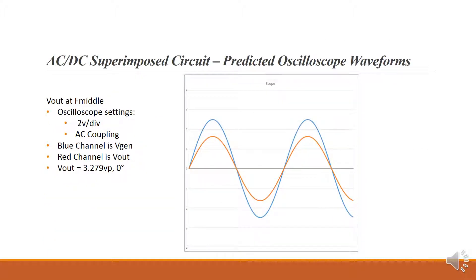Now that we know all the angles and voltages at the different frequencies, we can predict what we will see on the oscilloscope. At F middle with oscilloscope settings at 2 volts per division and AC coupling, the blue channel is V gen and the red channel is V out. We can see Vout is 3.279 volts peak, in phase with the generator.